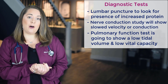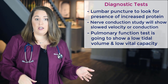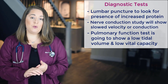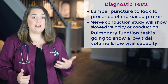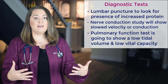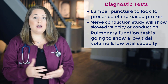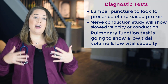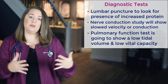The third test is a pulmonary function test, which will show a low tidal volume — the amount of air that moves in and out of the lungs with each breath — and a low vital capacity, which is the volume of air that can be expelled fully from the lungs after taking a deep breath. This is again because the intercostal muscles and the diaphragm help us take deep breaths and exhale CO2 out of our lungs.